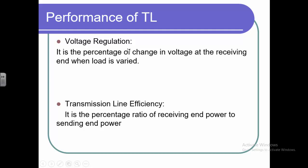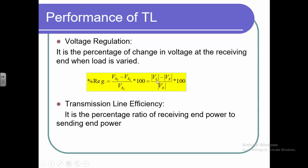Voltage regulation can be defined as the difference between the no-load receiving end voltage and the full-load receiving end voltage, expressed in terms of percentage. The no-load receiving end voltage can also be called the sending end voltage, because at no-load condition there is no flow of current, so we can say there is a flat voltage profile. Whatever the voltage at the sending end side, we can maintain at the receiving end side also. So VS minus VR gives us how much the transmission line is regulated.